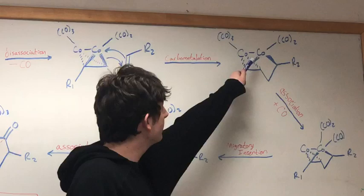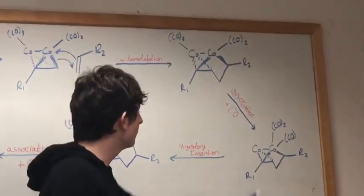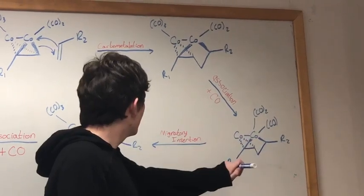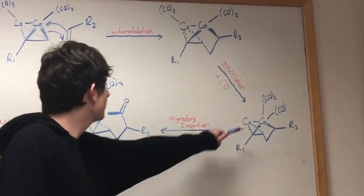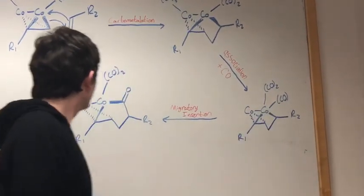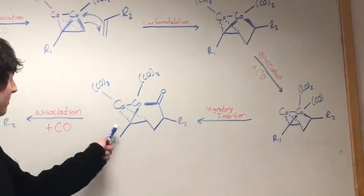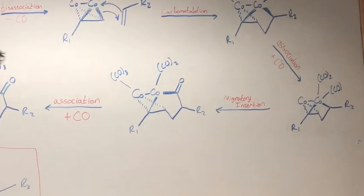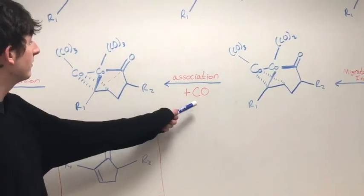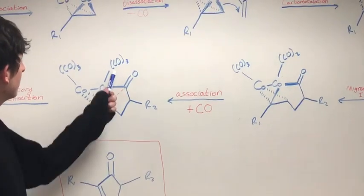Next, we're going to have the association of a carbon monoxide to our catalyst, so that we again have three. And then, in a migratory insertion, this carbon monoxide is going to insert itself into our molecule, forming this. Now, we'll have the association of another carbon monoxide group, reforming the three carbon monoxides on our catalyst.